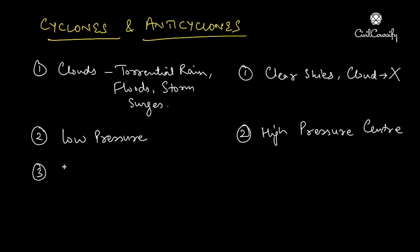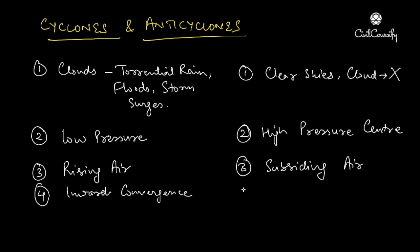In the cyclone case we saw the air rises up, and in the anticyclone case air subsides. The winds move inwards in the case of cyclones, whereas in anticyclones we see an outward divergence. In both cases the common feature is the Coriolis effect, due to which winds deflect towards the right in the northern hemisphere and towards the left in the southern hemisphere.